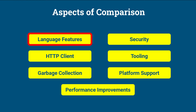Language features. Java 8 introduced Lambda Expressions, the Stream API, default methods and interfaces, the java.time package for date and time manipulation, and the Optional class for handling nullable values. Java 11 introduced local variable syntax for Lambda parameters, which allows the var keyword to be used in Lambda expressions, and added several new methods to the String class for common string operations.